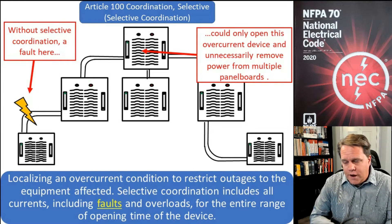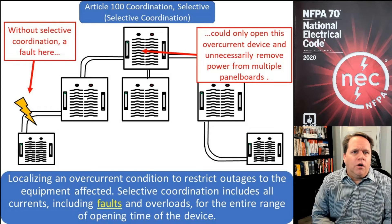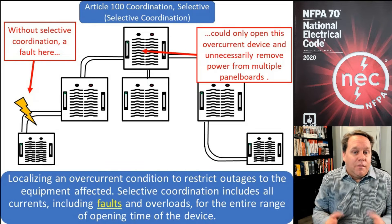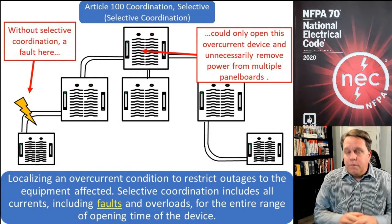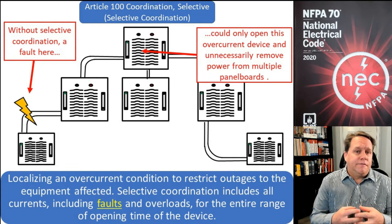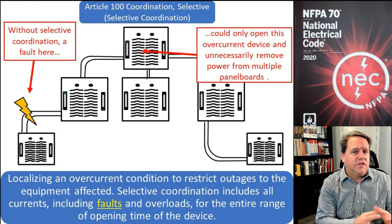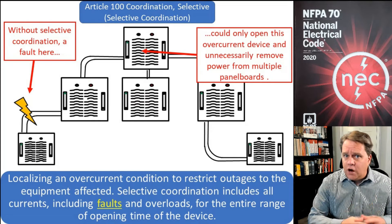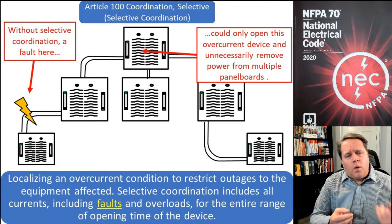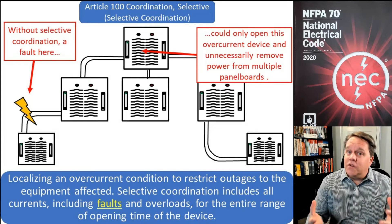If you lose power to the entire building and it's just a little shoe store in a mall, it might not be a big life safety issue. But if we have a high-rise building with an emergency system — emergency lights, exit signs, fire pumps, smoke control systems, elevator recall — and a fault on one emergency light took out the emergency generator, that's obviously unacceptable.